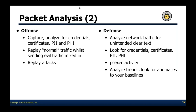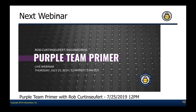That wraps up the slideshow. I'll go through some additional Scapy demos if people want. We have Rob Curtain Cipher doing a purple team primer next month on July 25th at noon Pacific, 3 PM Eastern. If you go to inguardians.com/webinars you'll see the sign-up. Highly recommended — Rob is amazing, our head of purple teams at InGuardians. He and some colleagues will give a round table discussion and take questions. If you have any doubts or opinions about what a purple team is and should be, definitely join us next month.